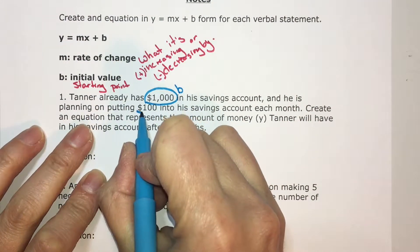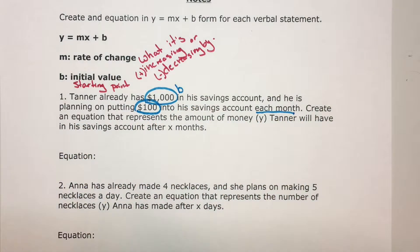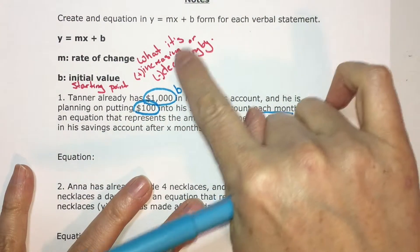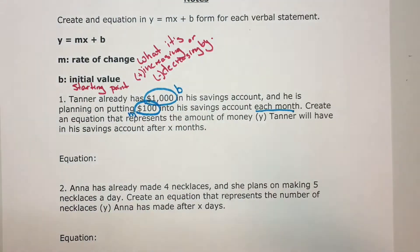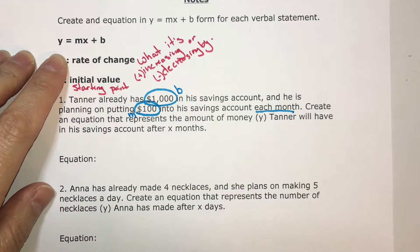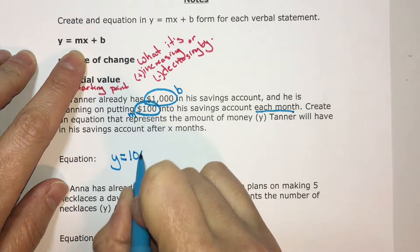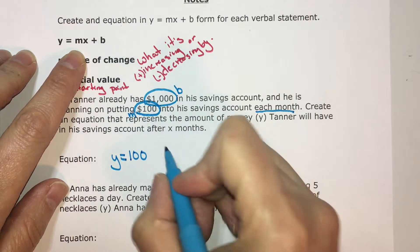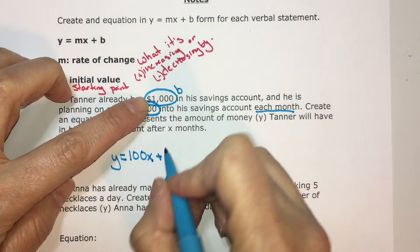He is planning on putting $100 into his savings account each month, so he's adding this every month — that's what we're increasing by, so that would be m. Because it's increasing, it's positive. Putting it in this form, keeping x and y as the variables: y equals 100x plus 1,000, where the slope or rate of change is 100 and the initial value or starting point is 1,000.